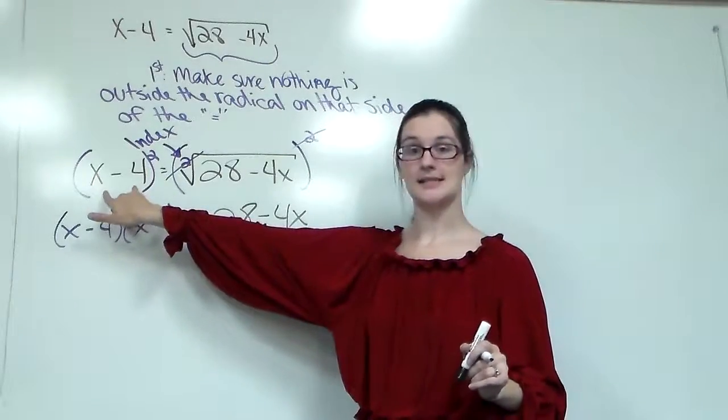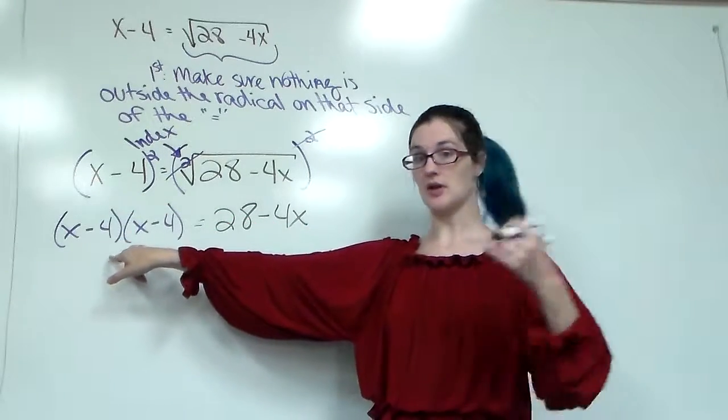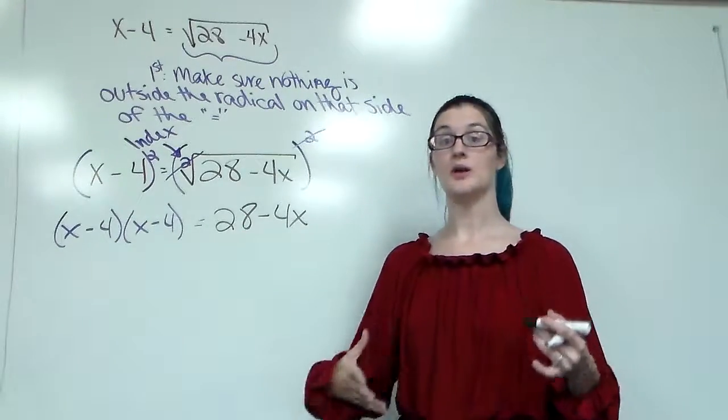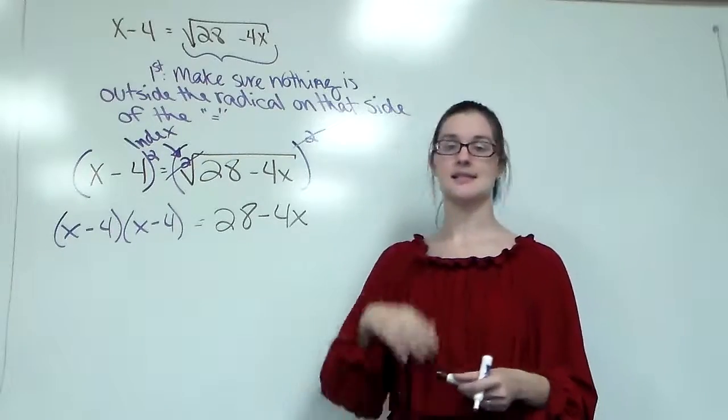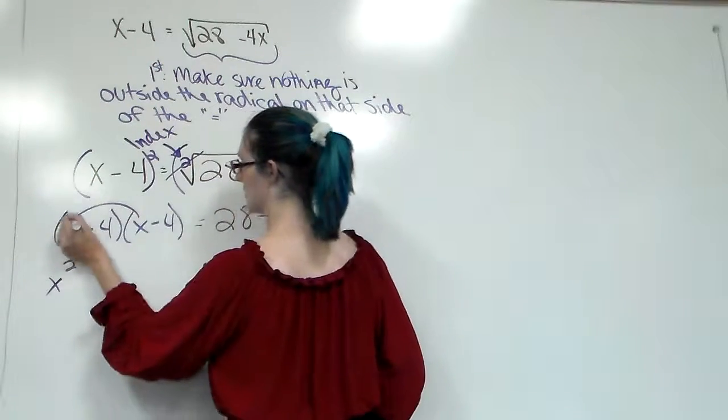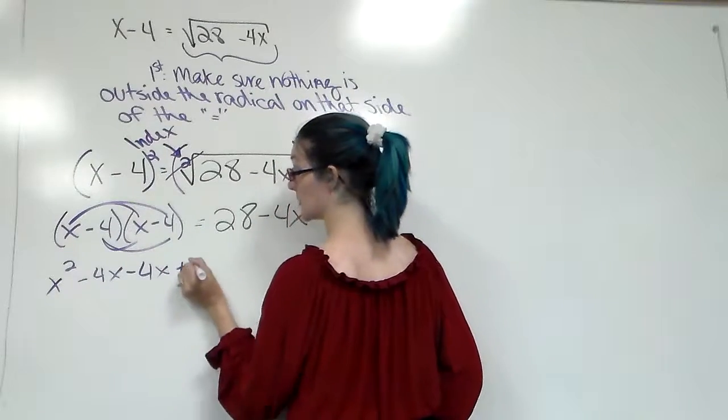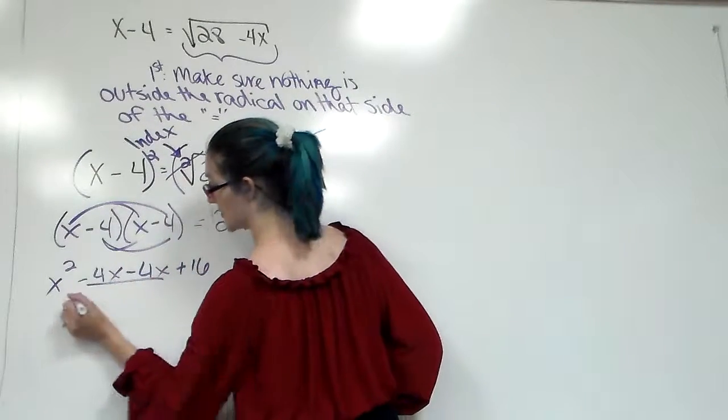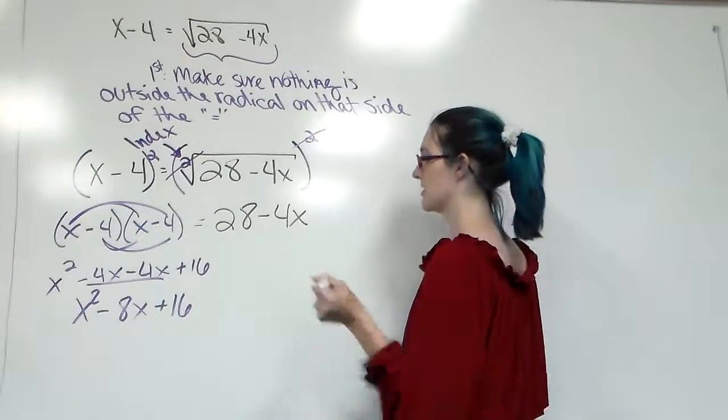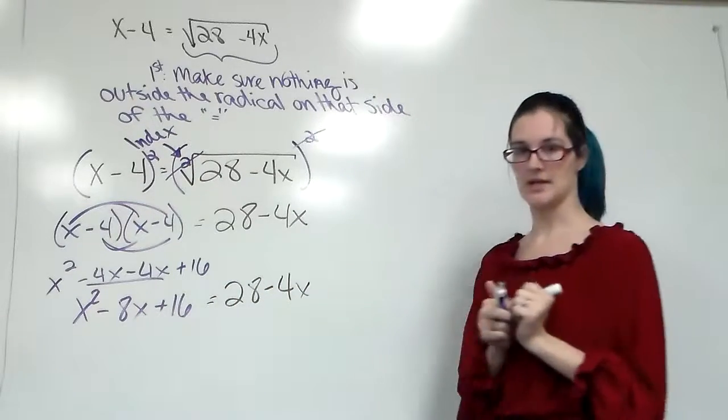If you have multiple pieces on the opposite side of your radical symbol, you will have to FOIL, distribute however you think about it. If you have multiple pieces, you have to FOIL. If you don't, it will automatically be wrong. If we'd have put x squared minus 16, it would have been wrong. So once we FOIL this, we get x squared minus 4x minus 4x plus 16. Careful with sign numbers. That's x squared minus 8x plus 16. Don't forget your other side.